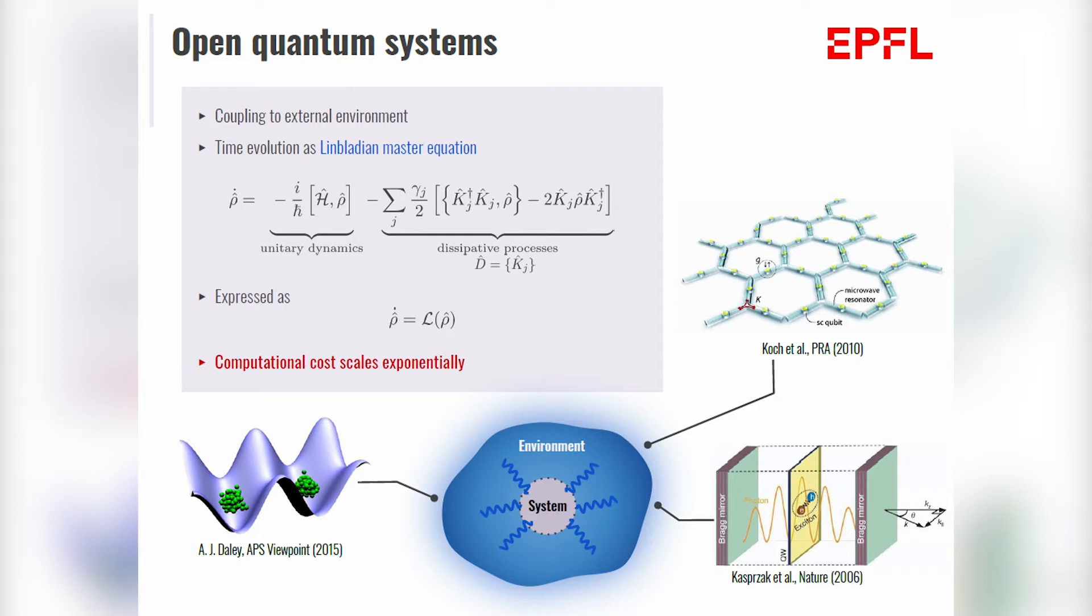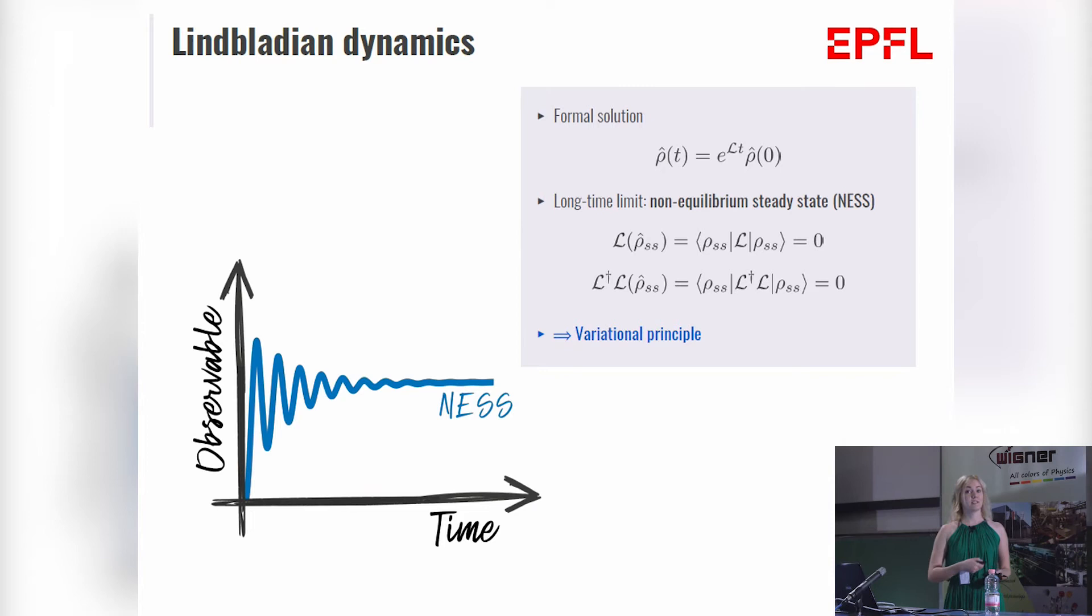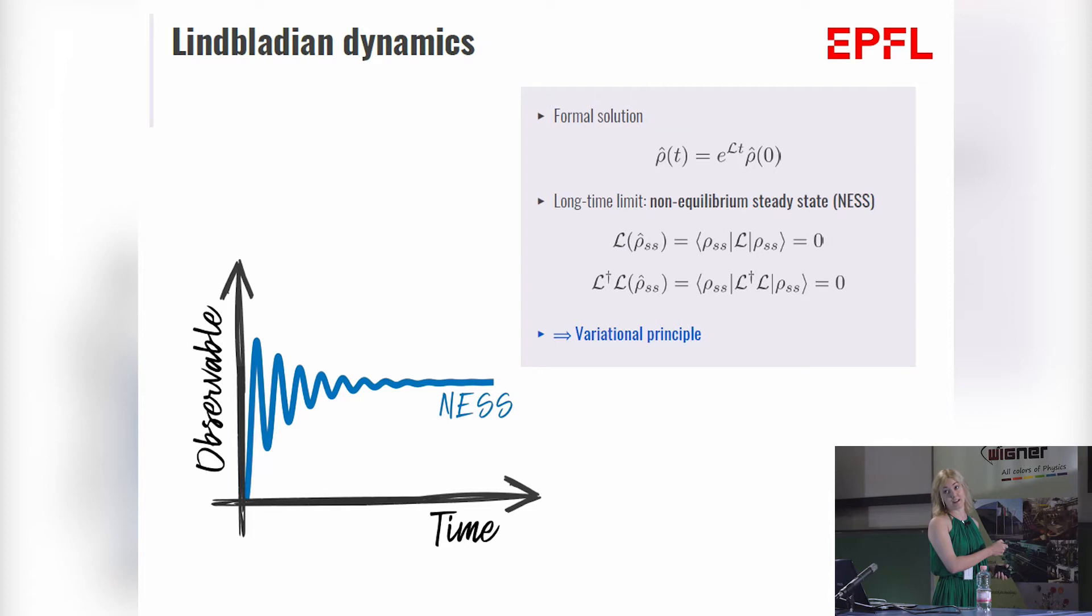So if we solve this time evolution, the formal solution is of an exponential form. But we have to realize that this super operator is not Hermitian anymore. Therefore, the time evolution is no longer unitary. This super operator has peculiar properties which leads to a complex dynamics. We are lucky, however, because this complex dynamics generally leads to a non-equilibrium steady state in the long time limit, and this gives us a promising numerical approach to use the variational method.